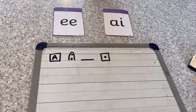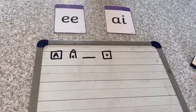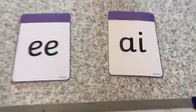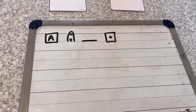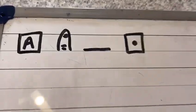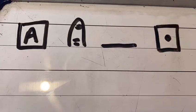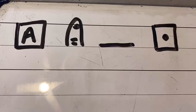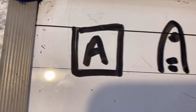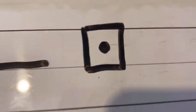Now it's time for some sentence writing. Can you remember our sounds? 'E' and 'a'. But before I start to write my sentence, what are my super important steps of success? I start my sentence with a capital letter, I put finger spaces between my words, my letters sit on the line, and my sentence finishes with a full stop.